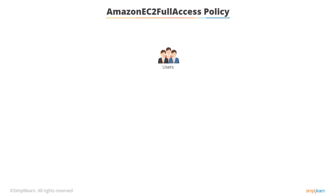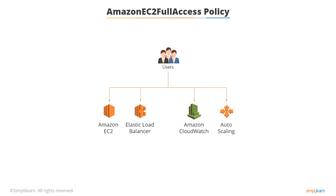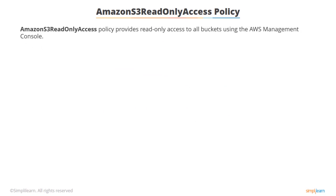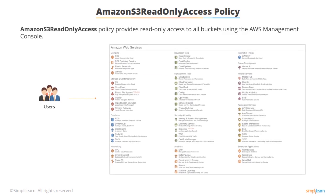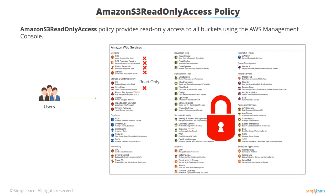Another popular policy is the Amazon EC2 Full Access policy, which provides full access to Amazon EC2 and associated resources – Elastic Load Balancer, CloudWatch, and Auto Scaling. Users with this policy can do what they want with EC2 but have no access to any other services. There's also the Amazon S3 Read-Only Access policy, which provides read-only access to all buckets via the AWS management console, but users have no permissions on any other services. As you can see, you can get very granular with your policy creation.